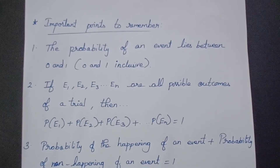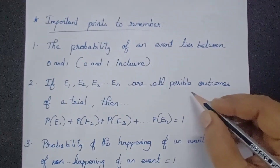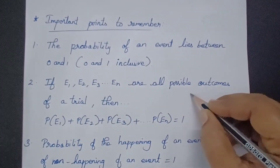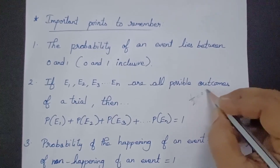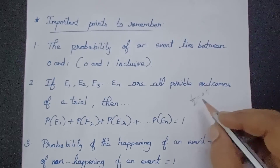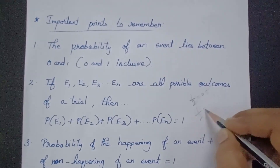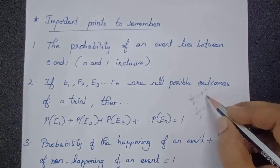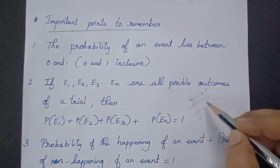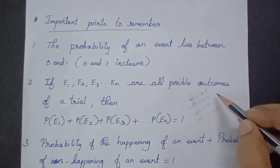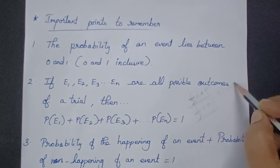For example, the probability of getting a head when you toss a coin is 1/2, which equals 0.5. The probability of getting a tail is also 1/2, which equals 0.5. So, probability of head plus probability of tail equals 1: 0.5 plus 0.5 equals 1.